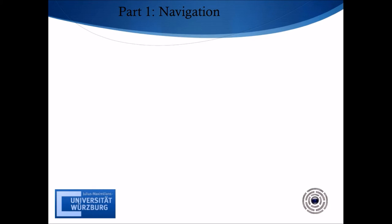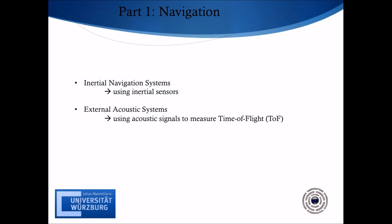In general, one can differentiate between three main types of navigation systems for underwater vehicles. Inertial navigation systems use inertial sensors like accelerometers and gyroscopes to propagate the current state with increased accuracy, but one will get errors in position which accumulate to unbounded error growth. In external acoustic systems, navigation is based on measuring the time of flight of acoustic signals to determine the relative position to beacons or modems. Geophysical navigation uses environmental information to perform navigation, with sensors and processing capable of detecting and identifying crucial environmental features.